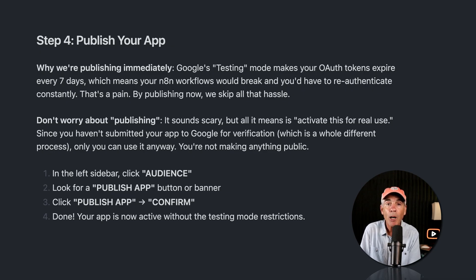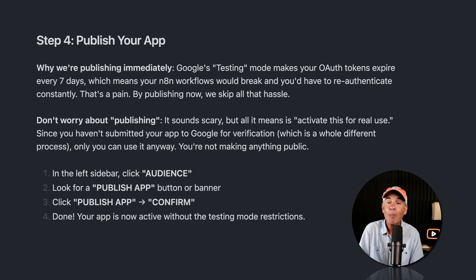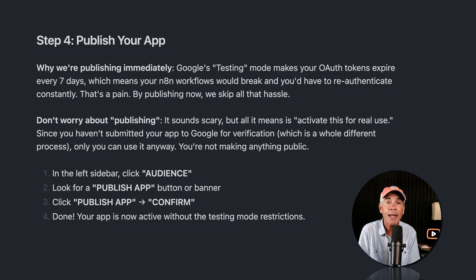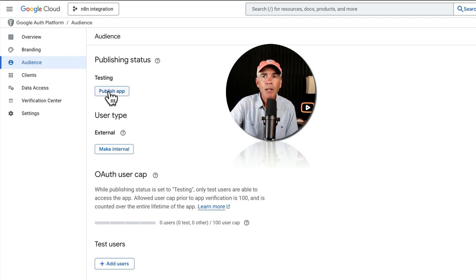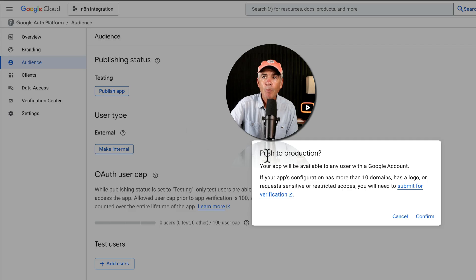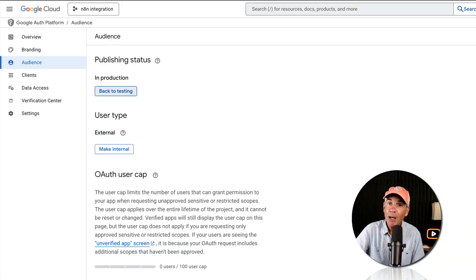Step four: we're going to publish the N8N app. If you do not publish the app, when you return to N8N and try to sign into Google, you are going to get an error message. Do not worry — you're not making anything public by publishing the app, you're just activating it so it is ready to use in N8N. To publish, go to the Audience tab in the sidebar, click Publish App, push to production. You're not going public — you're just activating the app. Click Confirm. The app is published. If you change your mind, you can always go back to testing.